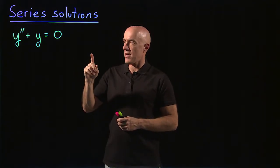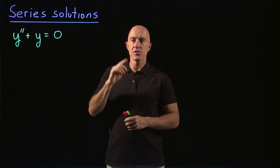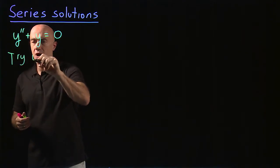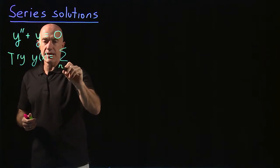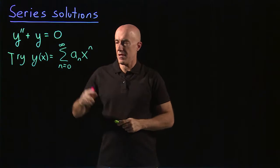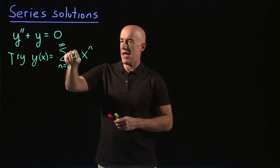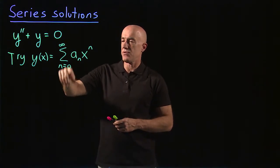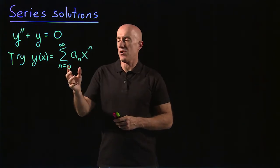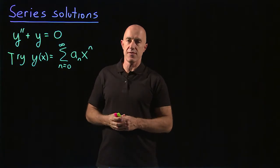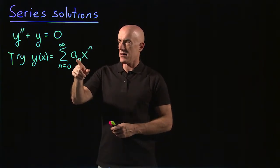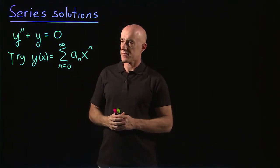So how do you solve a differential equation using a series solution? You try an ansatz, which is a series solution. We try y of x equals a sum from n equals 0 to infinity of a sub n times x to the n. This means a0 plus a1 times x plus a2 times x squared plus a3 times x cubed, etc. This is a power series — you can view this as a power series or as a Taylor series of the solution. We need to substitute that into the differential equation, which means we need to take a second derivative of the series, which you can do term by term.